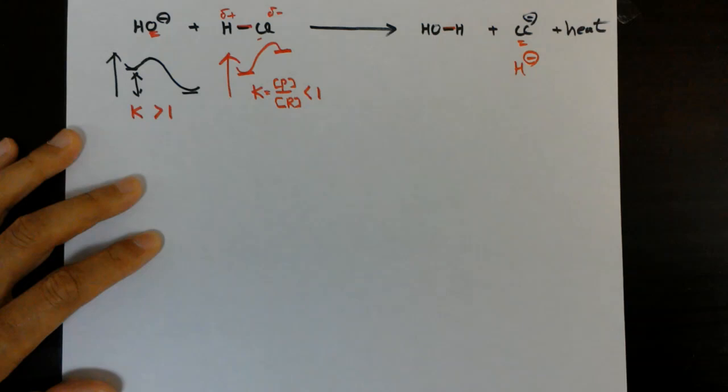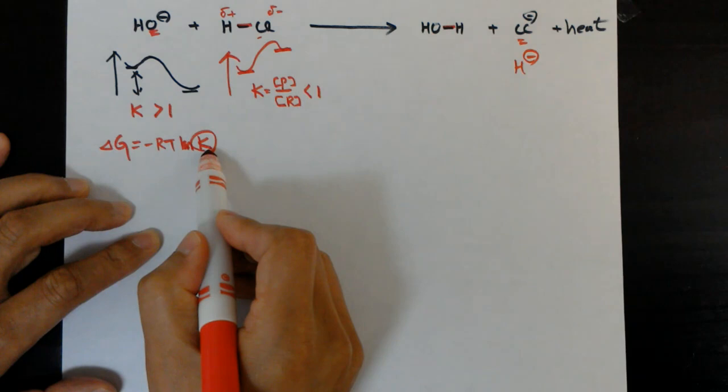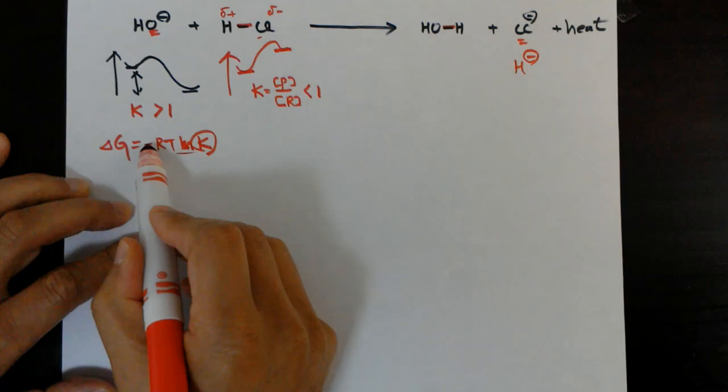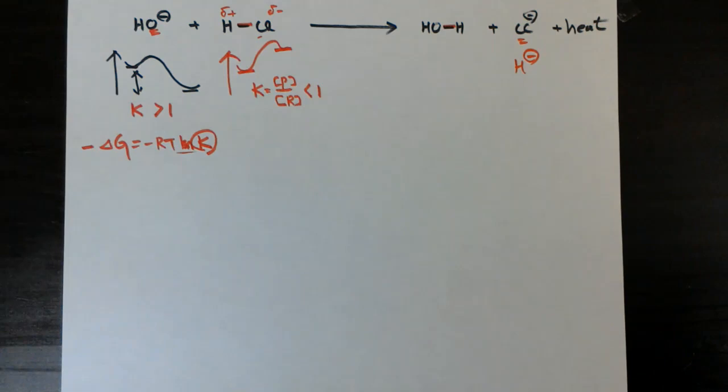If you plug that into Gibbs free energy: when K is greater than 1, taking the log gives a positive value, and multiplying by the negative sign makes delta G negative. So when Gibbs free energy is negative, it is favorable — exothermic. And the opposite applies for the endothermic case.